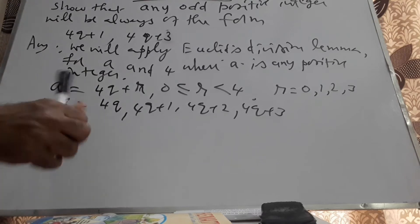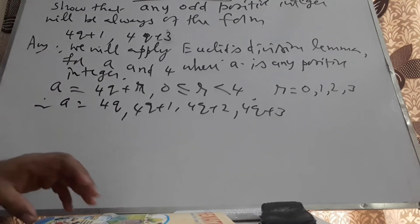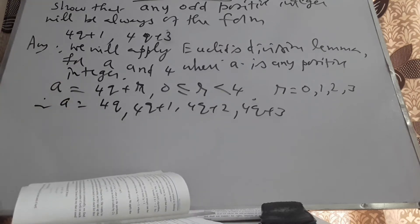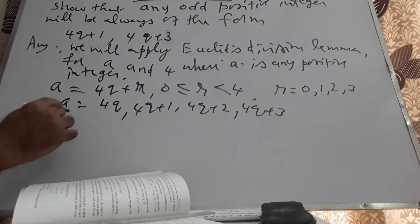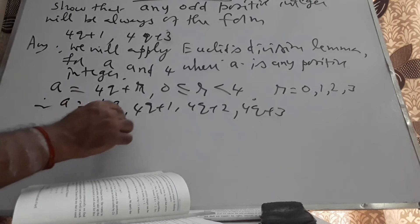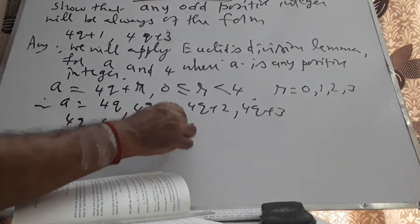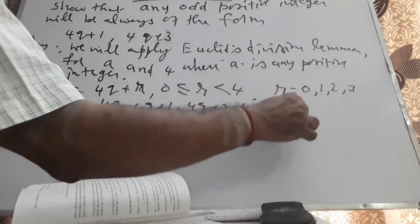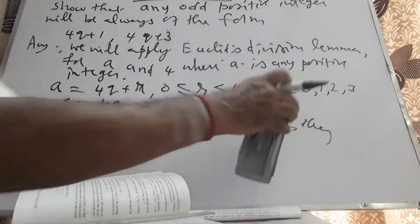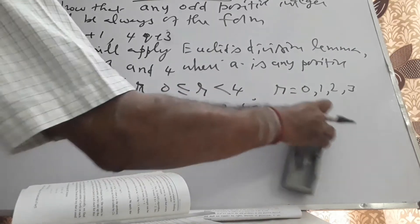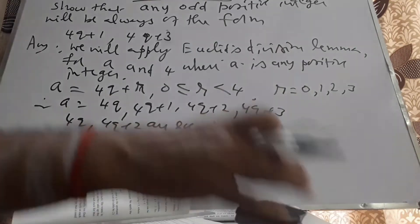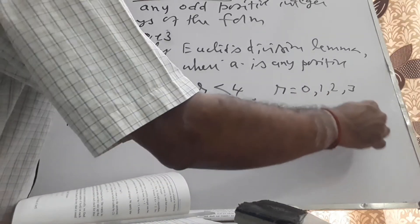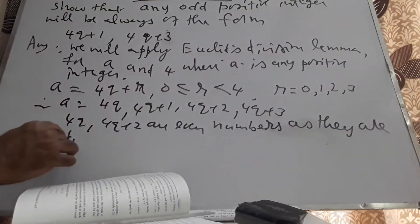For R=0, A is 4Q. When R=1, A is 4Q+1. When R=2, A is 4Q+2. When R=3, A is 4Q+3. Now here 4Q and 4Q+2 are even numbers, as they are divisible by 2. Any number that is a multiple of 2 or divisible by 2 will be an even number.